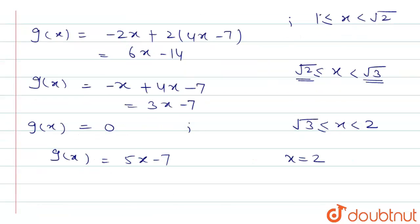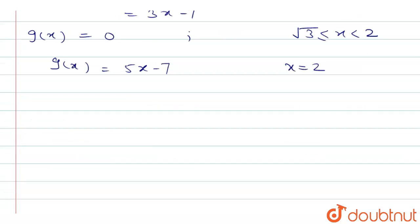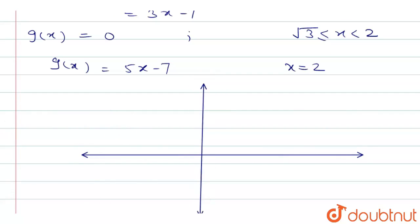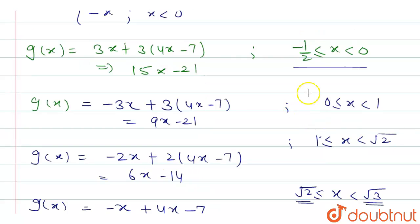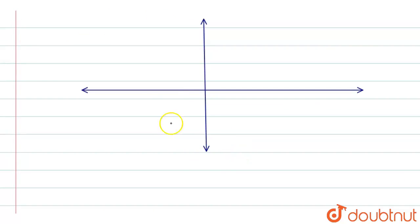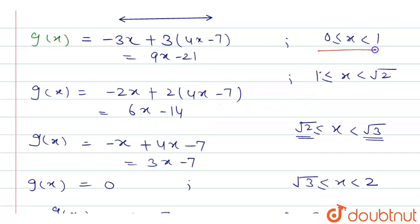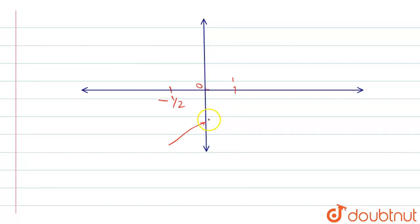Now let's plot the graph of g(x). On the x-axis mark: -1/2, 0, 1, √2, √3, 2. Between -1/2 and 0, g(x) = 15x - 21, which is continuously increasing. Between 0 and 1, g(x) = 9x - 21, also continuously increasing.